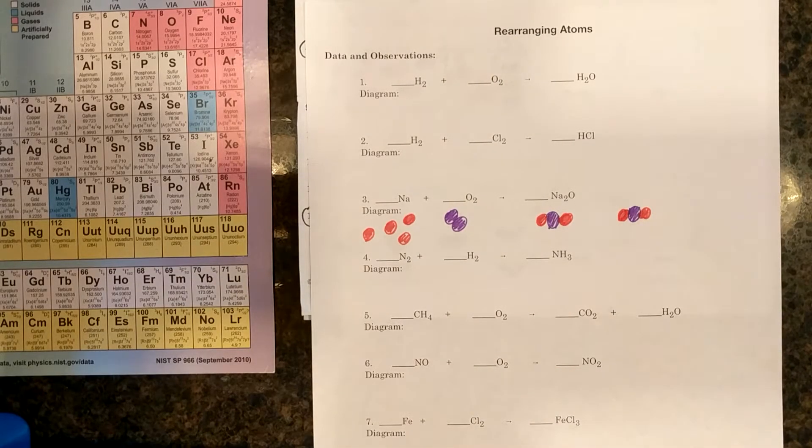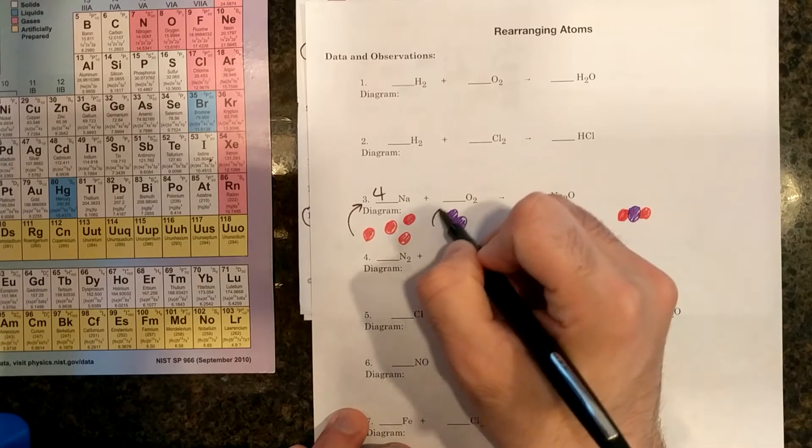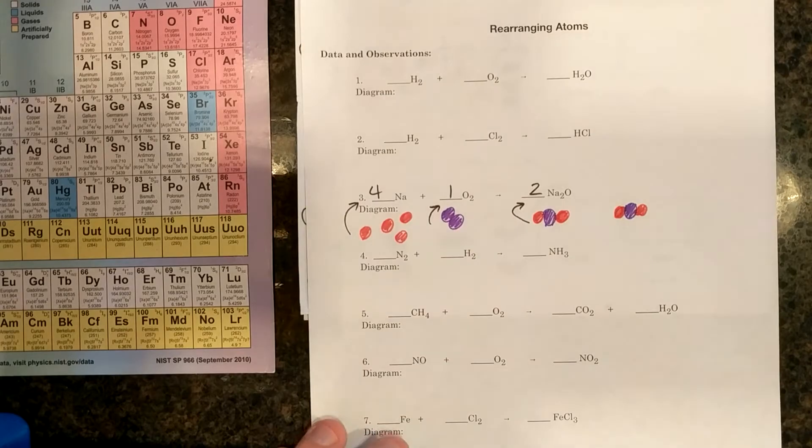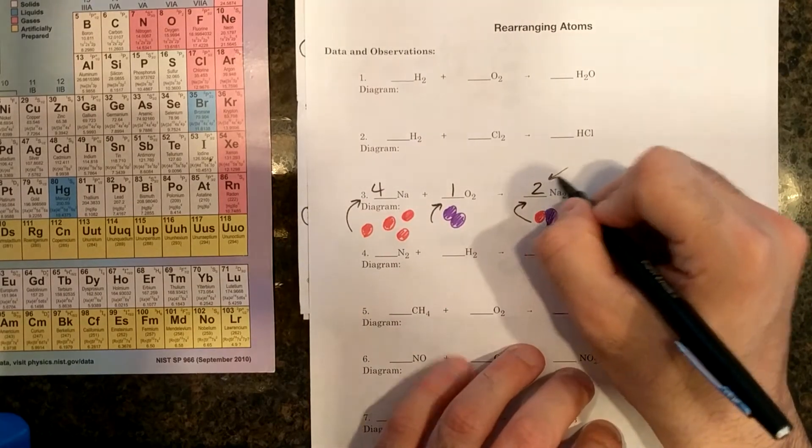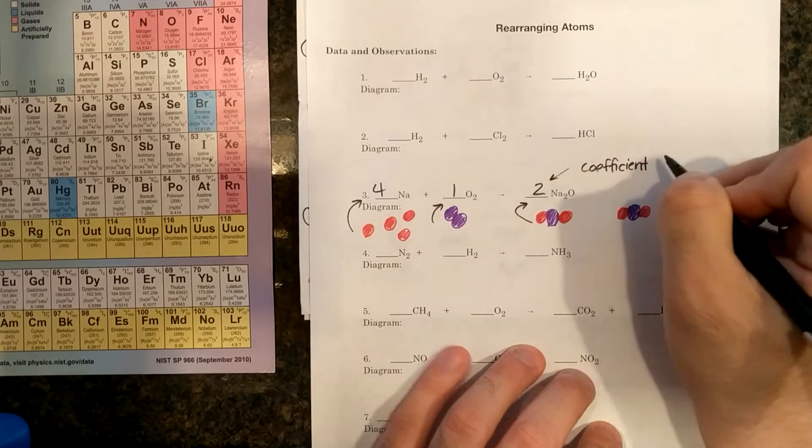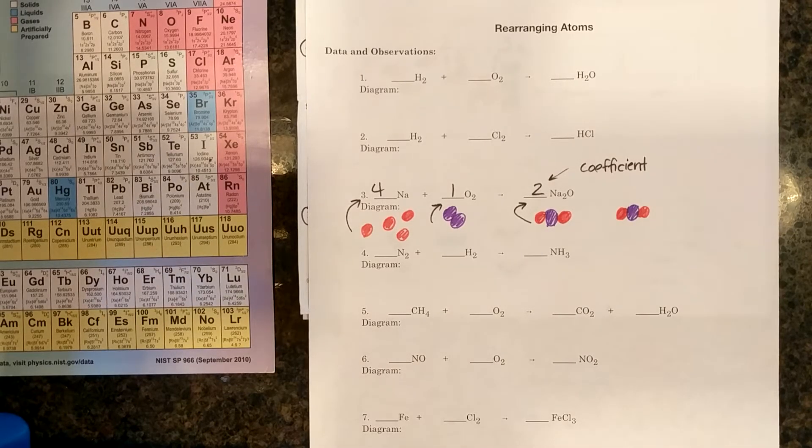And I'm going to use coefficients to tell me how many atoms or molecules I use in this reaction. So I used four Nas, only one O2, and I made two Na2Os. And remember, this is a coefficient. It tells me how many elements or compounds or atoms or molecules are used to completely react. I cannot have leftover and I cannot have incomplete products.